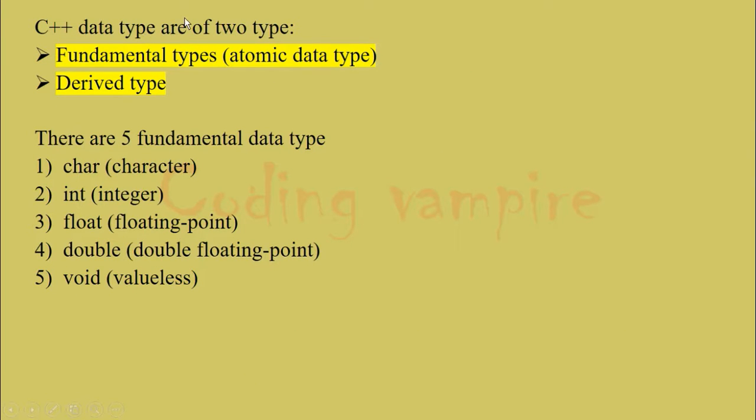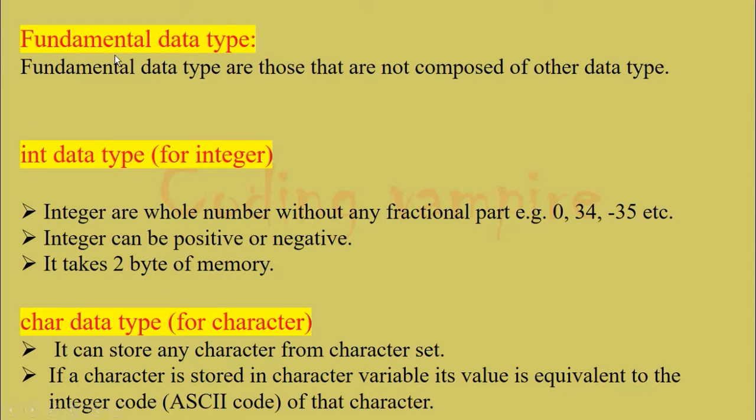C++ data types are of two types: fundamental type (also called atomic data type) and derived data type. There are five fundamental data types: char stands for character, int stands for integer, float stands for floating point, double stands for double floating point, void stands for valueless. So we'll discuss each of them in the next section. Fundamental data types are those that are not composed of other data types.